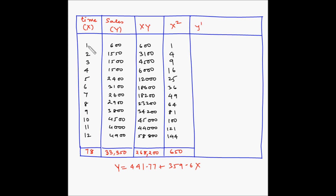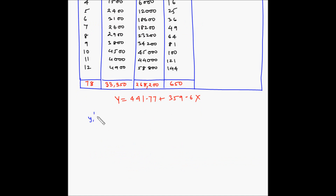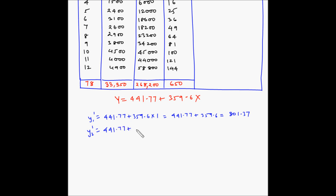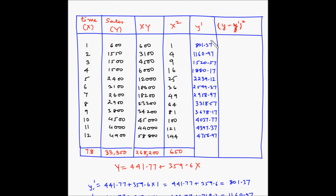We input the values of x into this equation and the corresponding value of y will be y-dash. For the first one: y1-dash equals 441.77 plus 359.6 multiplied by 1, which equals 441.77 plus 359.6, giving 801.37. y2-dash equals 441.77 plus 359.6 multiplied by 2, which equals 441.77 plus 719.2, giving 1160.97. Similarly, we calculate all values of y-dash up to y12, and these are all the resulting values.